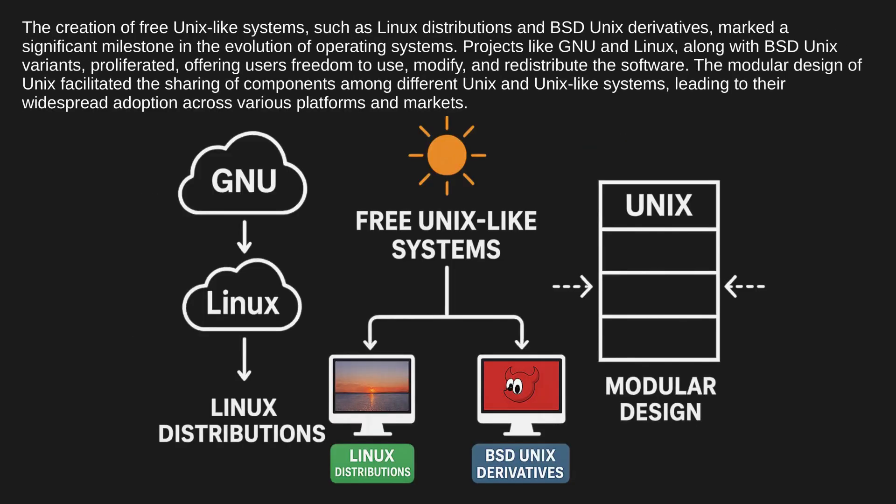The creation of free Unix-like systems such as Linux distributions and BSD Unix derivatives marked a significant milestone in the evolution of operating systems. Projects like GNU and Linux, along with BSD Unix variants, proliferated, offering users freedom to use, modify, and redistribute the software. The modular design of Unix facilitated the sharing of components among different Unix and Unix-like systems, leading to their widespread adoption across various platforms and markets.